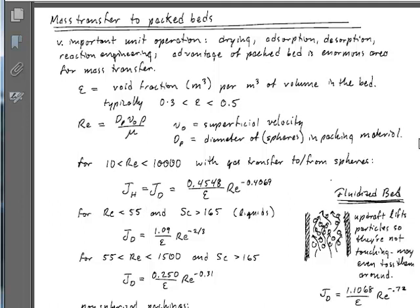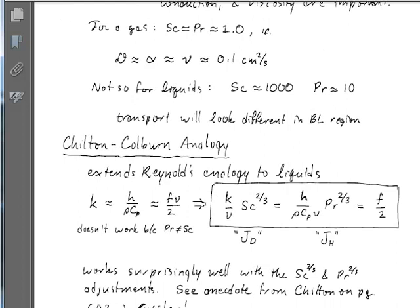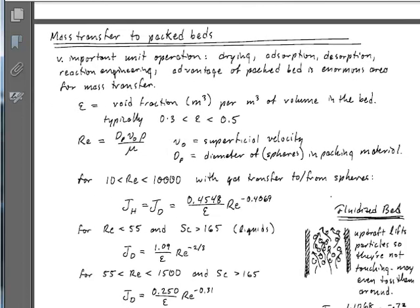To recap: F over 2 is given by the correlation in terms of Reynolds number and void fraction. By computing that, we know the J factors. By relating the J factors through the Prandtl number and heat capacity, we get the heat transfer coefficient. By using the Schmidt number and flow velocity, we get the mass transfer coefficient.